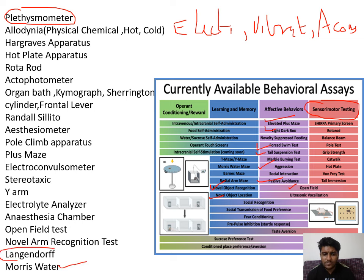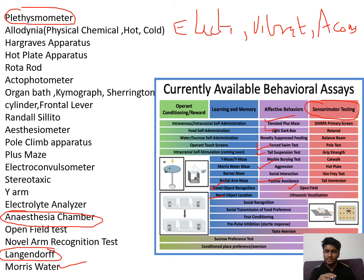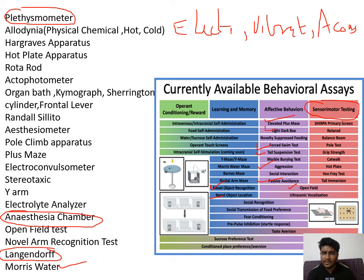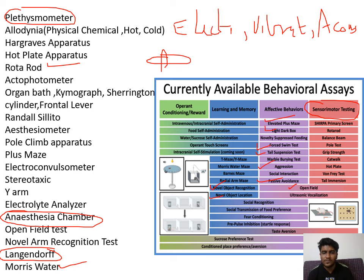Langendorff apparatus is widely used for cardiovascular parameter testing. An anesthesia chamber uses isoflurane or other anesthesia — just place the animal in the chamber and it will be anesthetized automatically. Other equipment includes stereotaxy, electroconvulsiometer to develop seizures in animals, pole climb, anesthesiometer, organ bath where response curves are plotted using a frontal lever on a Sherrington cylinder, rotarod for grip strength, and actophotometer for pain and motor coordination.